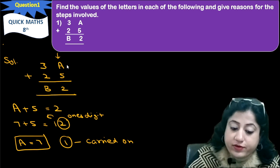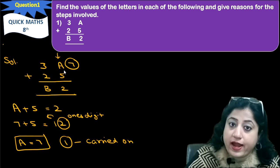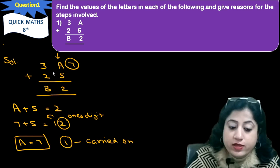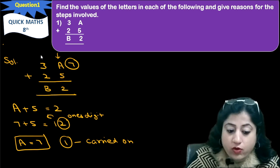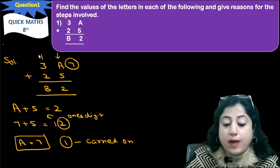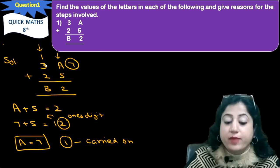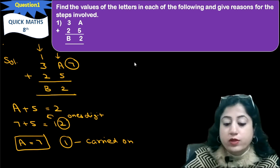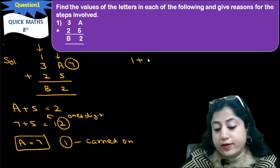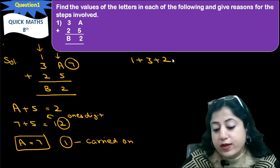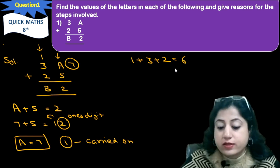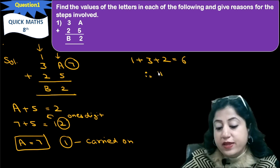So here 7 will be A. And when we add this, 7 plus 5 is 12. So 2 gives 1 place and here 1 will be carry. Now look at this row, second row. 1, 3, 2. So what will the sum be? 1 plus 3 plus 2, it will give 6. Hence, B will come out to be 6.